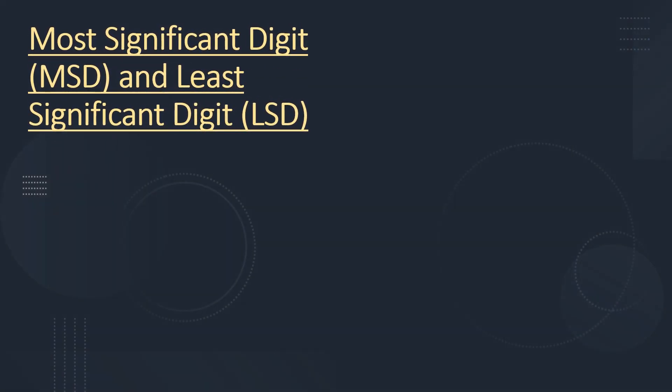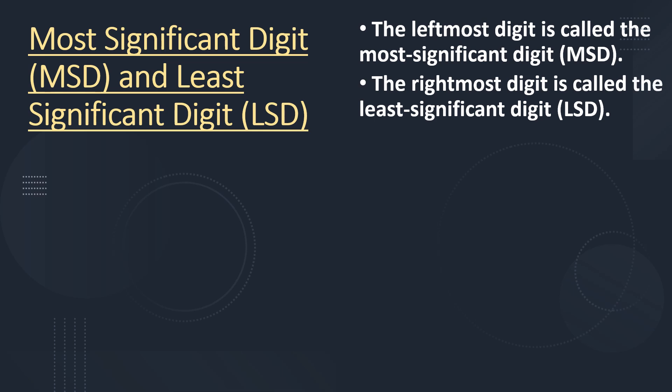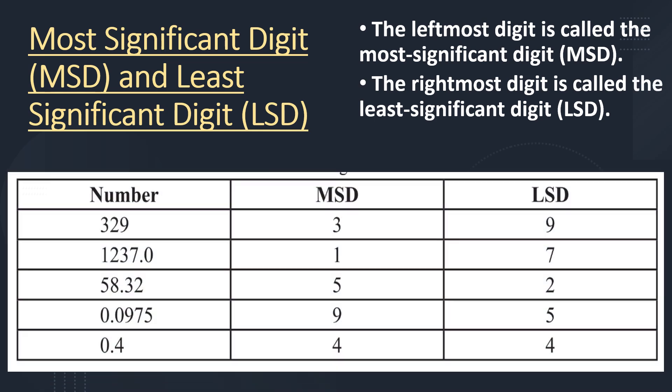Most significant digit and least significant digit. The leftmost digit is called the most significant digit, and the rightmost digit is called the least significant digit. For an example, take the number 329. The most significant digit is 3, and the least significant digit is 9.